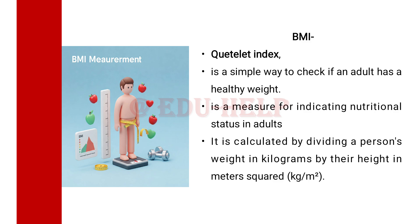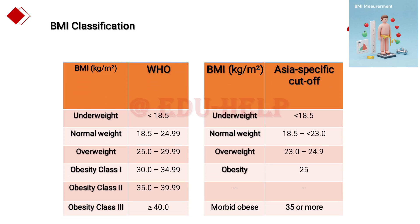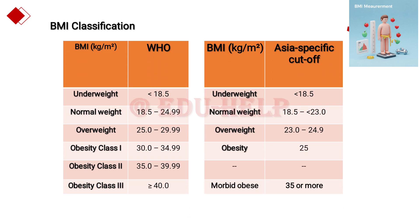BMI is calculated by dividing a person's weight in kilograms by their height in meters squared. There are certain BMI classification criteria as per WHO as well as Asian-specific cutoffs. Students in India, in our scenario, should follow the Asian-specific cutoff for BMI classification.